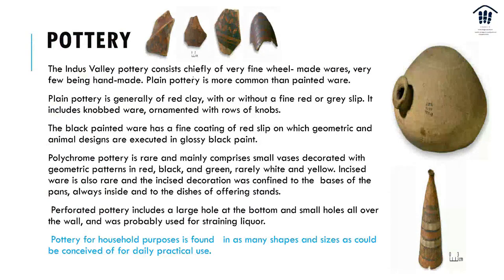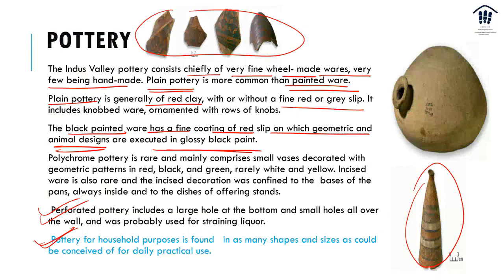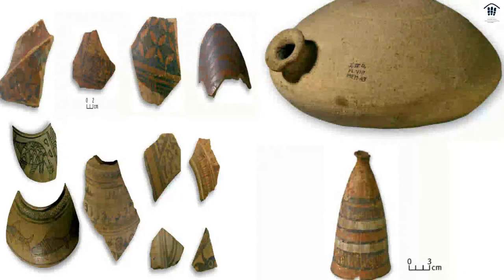What about pottery? The Indus Valley pottery was chiefly of fine wheel-made wares, with very few handmade pieces. Plain pottery was more common than painted ware, made of red clay with fine red or gray slip. It included knobbed ware with ornamental rows of knobs. There was black painted ware — fine coating of red slip with geometric and animal designs in glossy black paint. Polychrome pottery is rare and mainly comprised small vessels decorated with geometric patterns. Incised ware is also rare. Perforated pottery with a large hole at the bottom and small holes all over the wall was probably used for straining liquor. Pottery was found in many shapes and sizes for daily practical use.